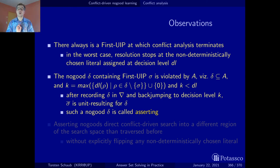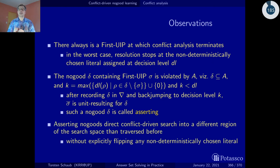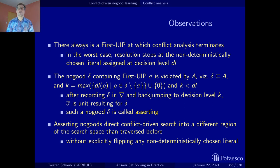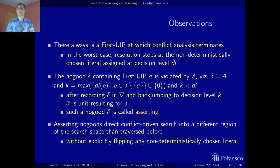A no-good that is right away ready for propagation is called asserting. These asserting no-goods are the ones that make us go from one area in the search space to another — and we can do this without explicitly flipping a decision literal as done in classical backtracking.